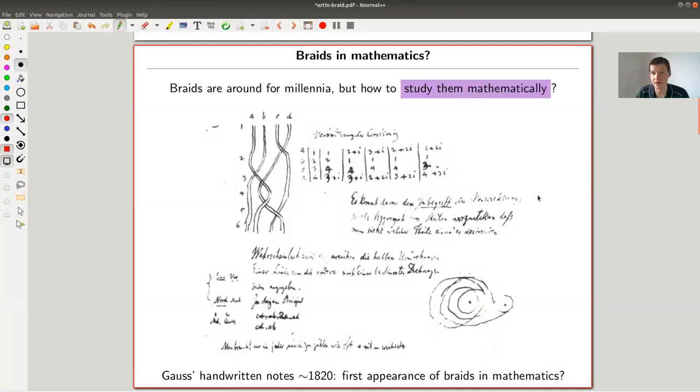So what is a braid? I'm going to talk about Artin braid groups. So I basically should tell you what a braid is. I'll show you a better picture in a second. But these are Gauss's handwritten notes. They're pretty old, 1820 roughly. It's hard to nail down handwritten notes because of course he never wrote down a date.